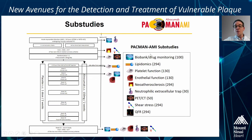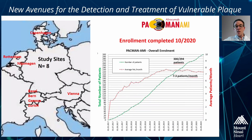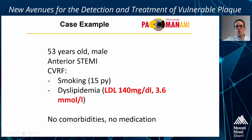We also assess several additional endpoints beyond imaging, including platelet function, endothelial function, PET-CT sub-studies, shear stress, and QFR changes in both groups. Study enrollment was completed in October of last year. It was a multi-center European study including a total of eight European sites.